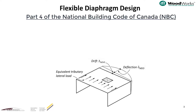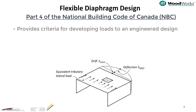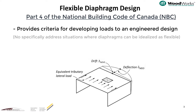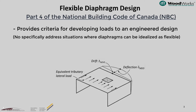In Canada, Part 4 of the National Building Code provides the criteria for developing loads to an engineered design. Part 4 of the NBC does not have any specific criteria which indicates when a diaphragm can be idealized as flexible, so if completing an engineered design following Part 4, one would need to complete both flexible and rigid diaphragm analysis.